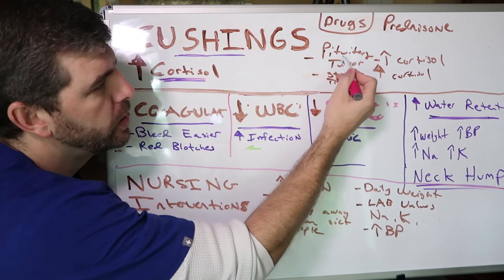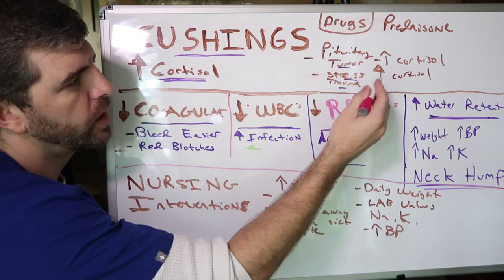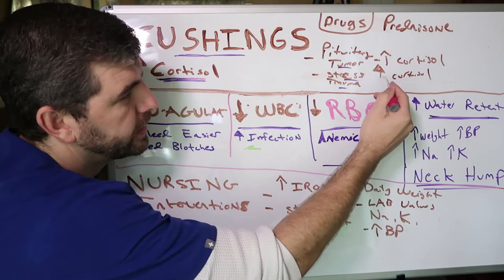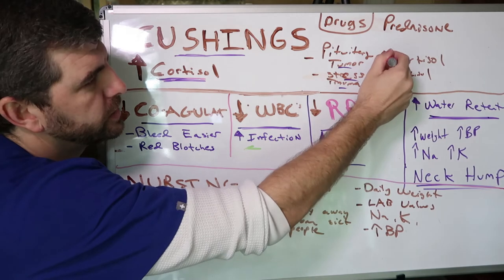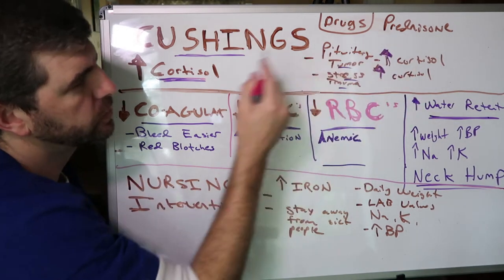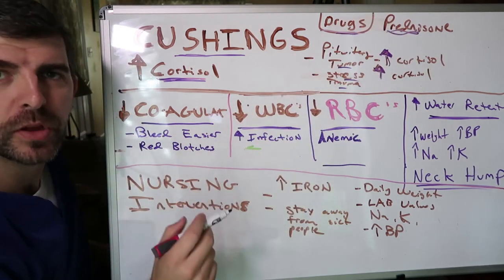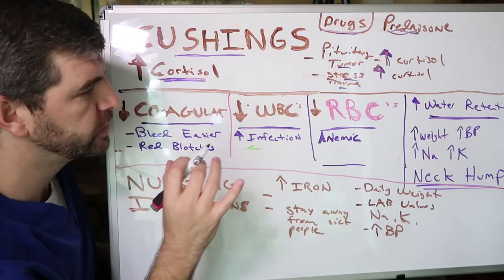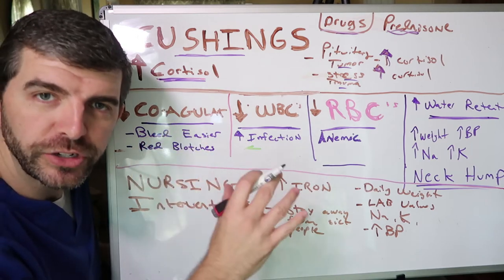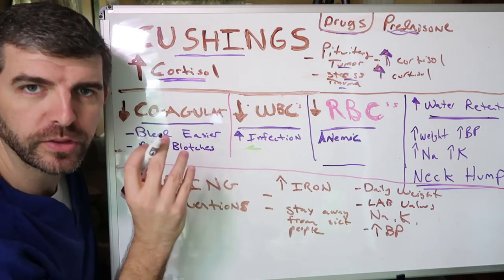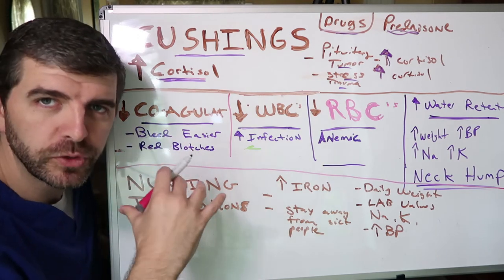So what are the things that can cause that increase in cortisol? We have pituitary tumors, stress, trauma — anything that can increase your cortisol can cause Cushing's disease. We also have drugs as well. Just remember that Cushing's disease is an overproduction or increase in cortisol from somewhere.